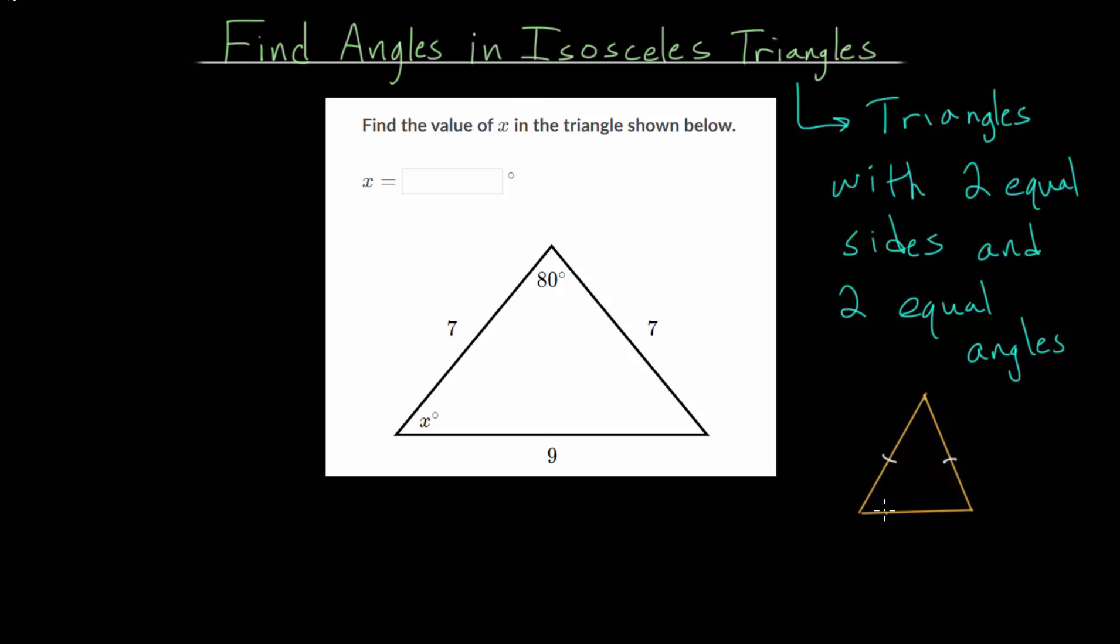So another way to think about it is that the two angles that are equal open up to the sides that are equal. So the angle that isn't necessarily equal to these is the one between the two equal sides. So this one is usually something different.